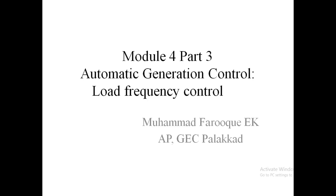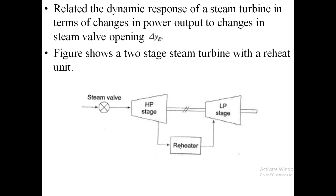In the last class we discussed about the block diagram representation of a speed governor system. In that, the response of a steam turbine with respect to changes in power output — changes in steam valve represented by delta y — means according to these changes in power output there is a change in the opening of the steam valve. The steam valve is opened and more steam input is given. That response is represented in our block diagram by delta y_e.